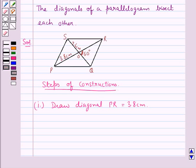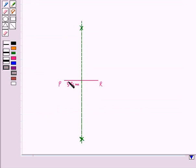Now since we have that the diagonals of parallelogram bisect each other, in the next step we will bisect PR at O. So we have bisected the diagonal PR at this point O, that is we have PO is equal to OR equal to 1.9 cm.